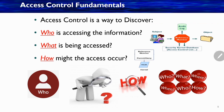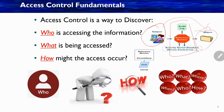Another definition: access control is a way to discover who is accessing the information, what is being accessed, and how the access occurs. Here we can see the subject accessing the object through a reference monitor, where we can set rights and permissions, define rules, and maintain audit logs.